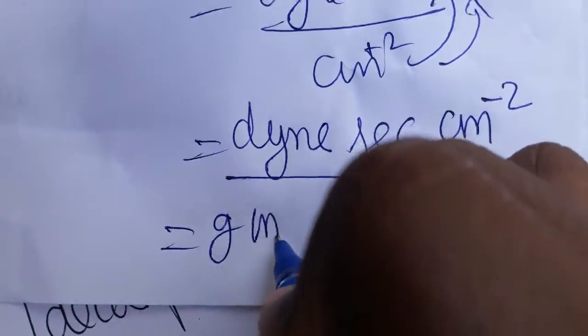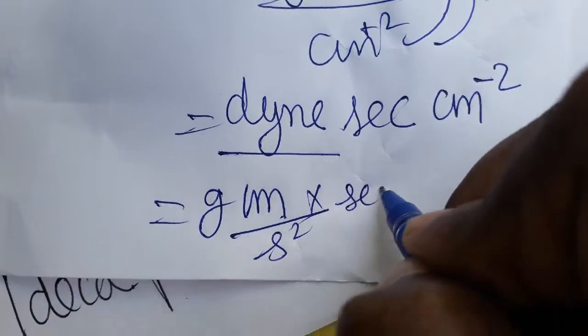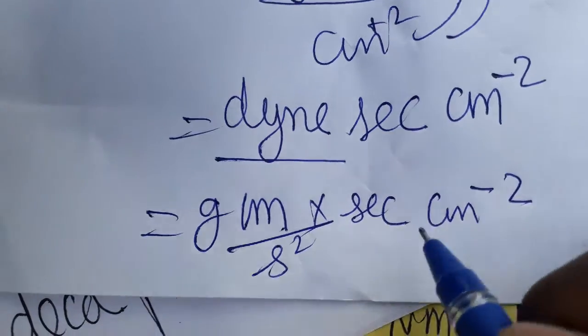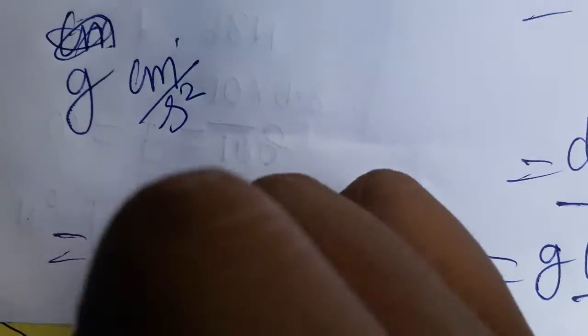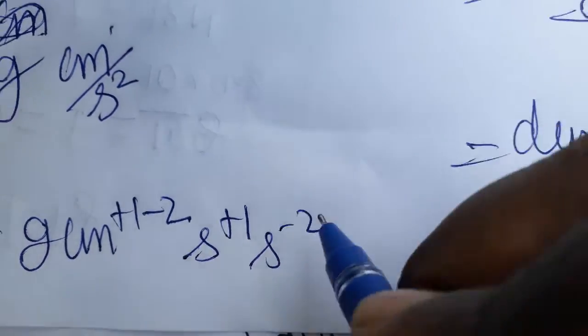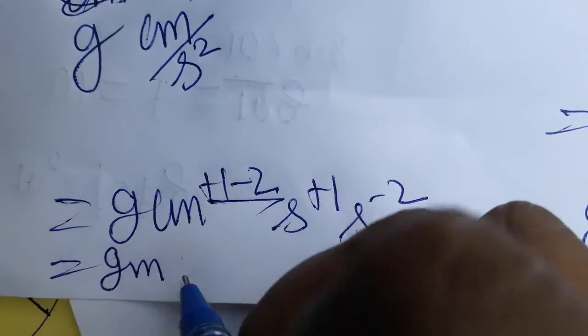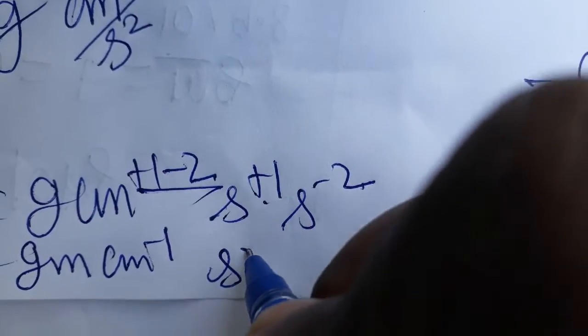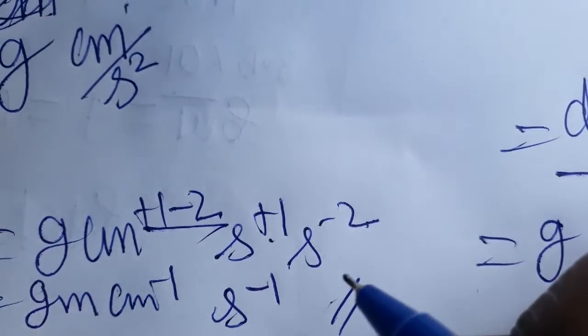We can simplify further: dyne is a force unit equal to mass times acceleration. In CGS, mass is in grams and acceleration is centimeter per second squared. So substituting dyne: gram·centimeter·second⁻² times second times centimeter⁻². Combining: centimeter exponent becomes 1 minus 2 = -1, and second exponent becomes -2 + 1 = -1. The final unit is gram·centimeter⁻¹·second⁻¹, which is the unit of one Poise.